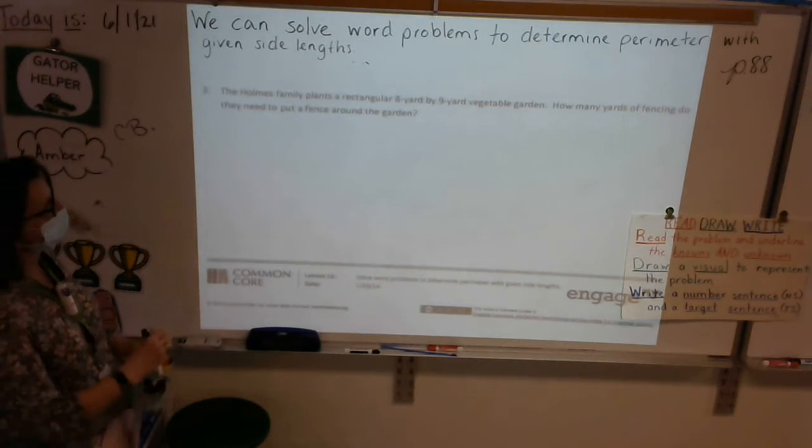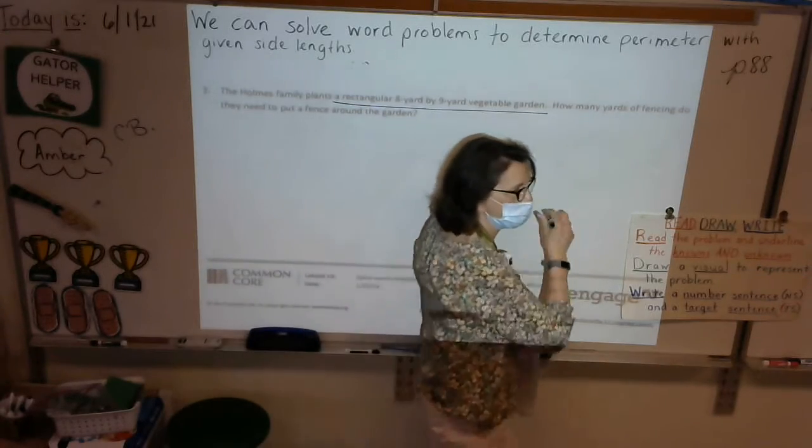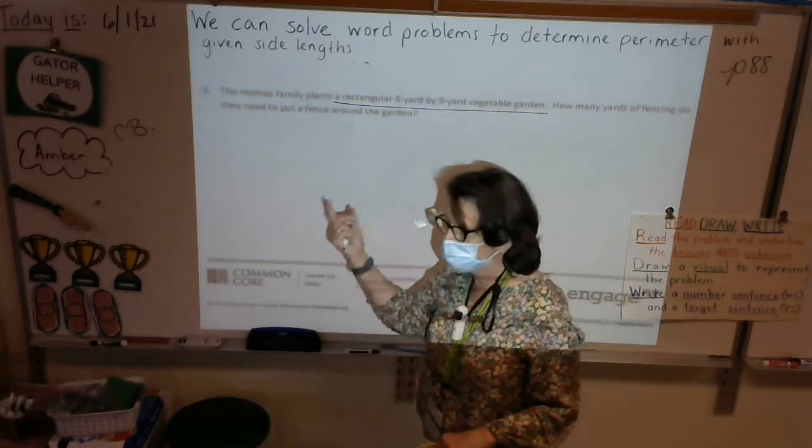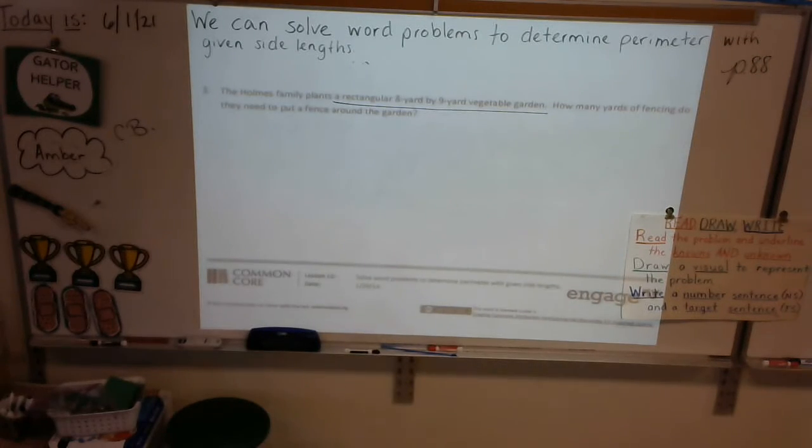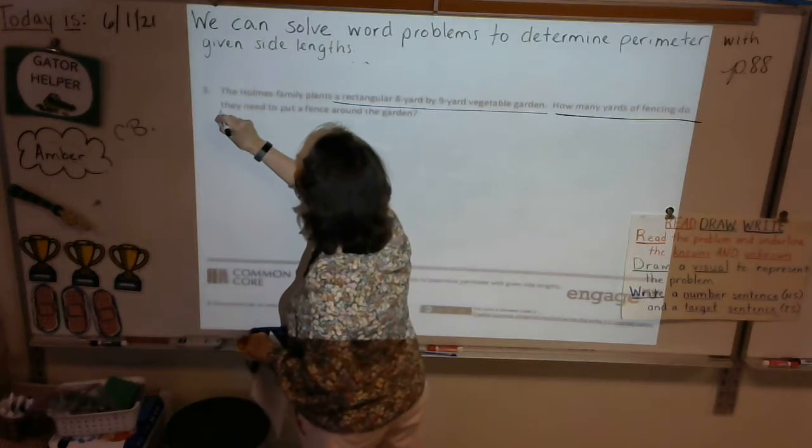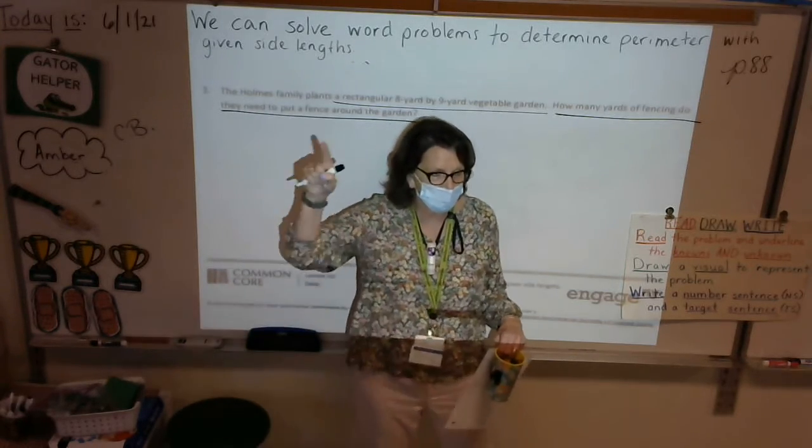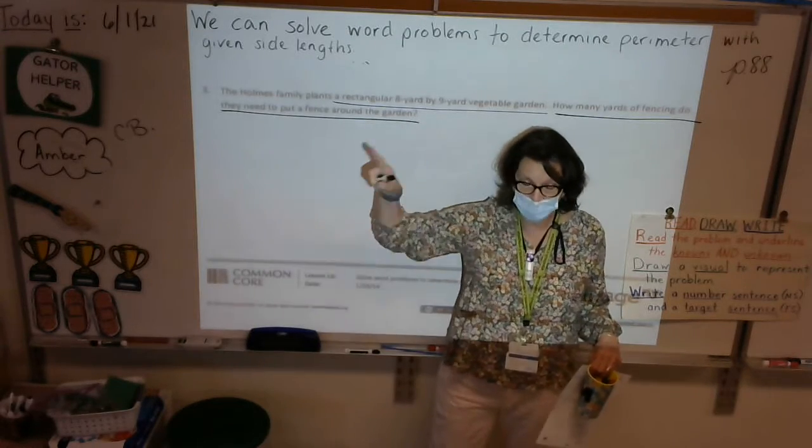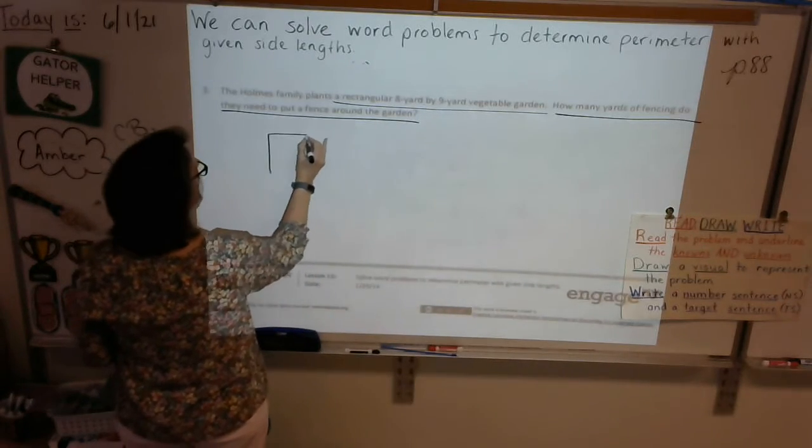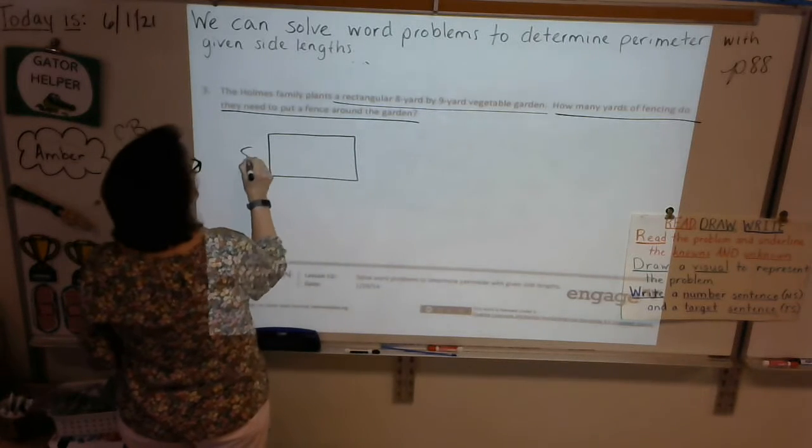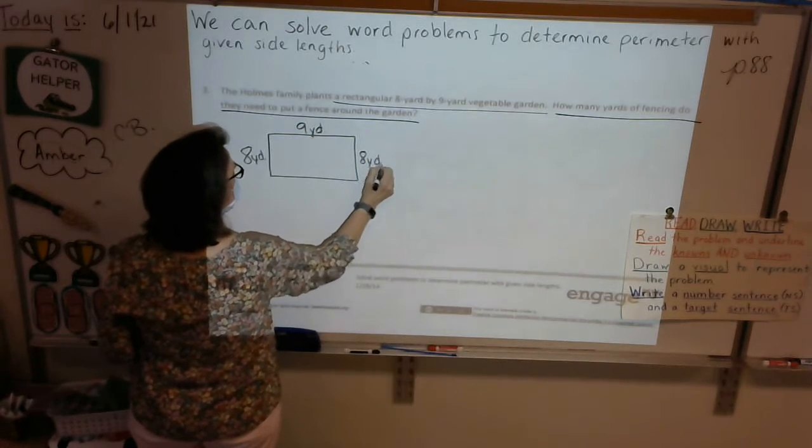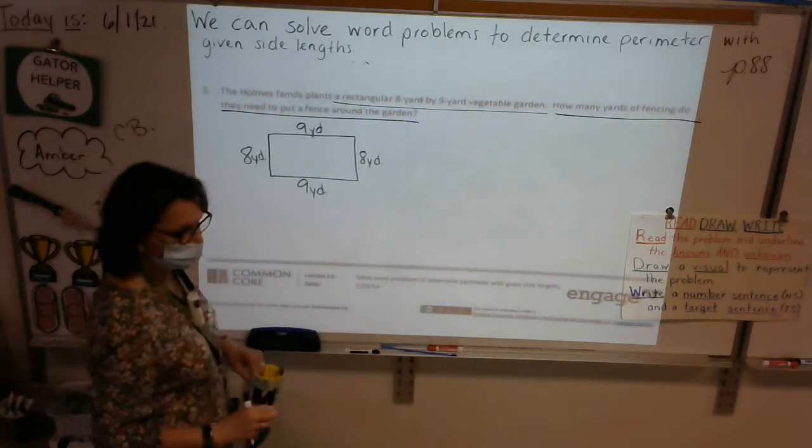Boys and girls, there is a lot of work to show for each one of these so I might suggest that you try to write small to fit your work in. The bigger you write, the harder it's going to be. Okay, so all right, here we go. Number three, could I have a volunteer to read number three for us please? Go ahead. Okay very good, nice job. So let's underline a rectangular 8 yard by 9 yard vegetable garden. So we all know what a rectangle looks like right? And we probably a lot of us have gardens in our backyard or maybe your grandparents have a garden or your neighbor has a garden and usually they're rectangles. So that's what we'll be drawing and we need to figure out how many yards of fencing do they need to put around the garden.